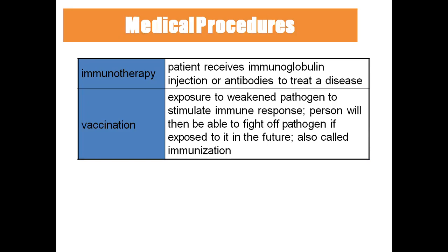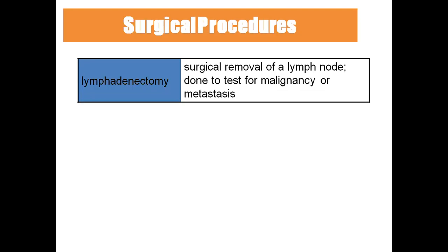Vaccination is a type of passive acquired immunity. The person is exposed to a weakened pathogen — like a dead virus — which is incubated, killed, and then inoculated into the body. The body then learns how to fight with that antigen, so the person is able to fight off the pathogen if exposed in the future. For example, chickenpox or smallpox occur only once in a lifetime because the body learns how to fight the disease.